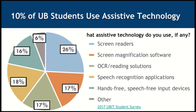At the University of Buffalo, 10% of students reported using assistive technologies. Some of those technologies include screen readers. Screen magnification software is used by 17% of respondents. OCR has been used by 17% of that 10%, and speech recognition by 18%. Hands-free speech input devices are used by 16% of those students who responded that they use assistive technology.